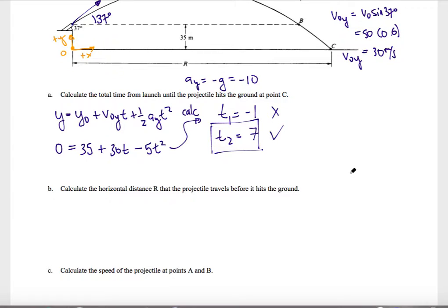For part b, I want to calculate the horizontal distance R that the projectile travels before it hits the ground. So R is just related to the x position, which I can again get from my kinematic equations. So x equals x0 plus v0x times t plus 1 half ax t squared.